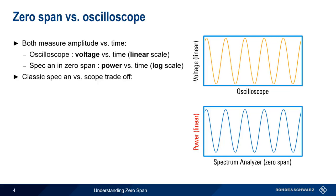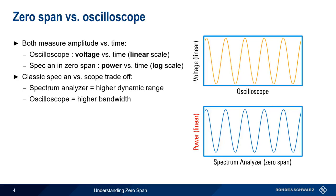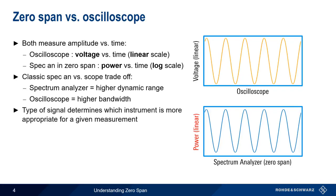Remember too that in general, a spectrum analyzer will have a higher dynamic range than an oscilloscope, but the oscilloscope will have higher bandwidth. These considerations often determine the choice of Zero-Span versus oscilloscope for a given measurement application.